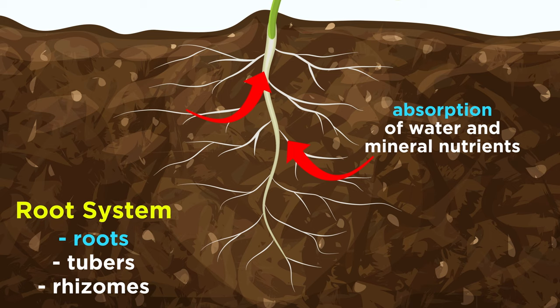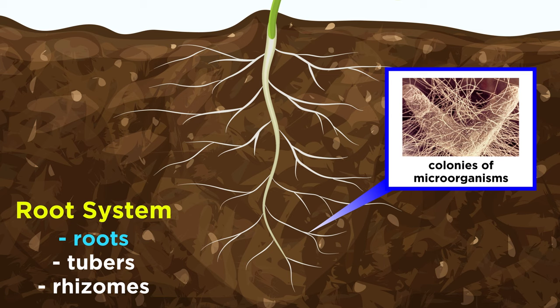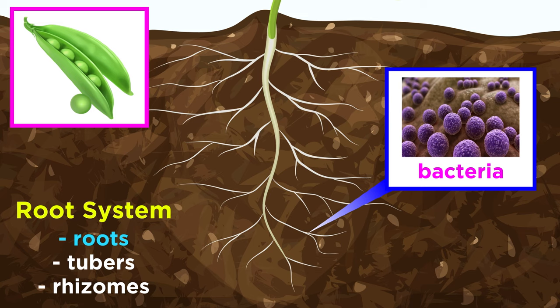The roots are branching structures that extend into spaces in the soil and absorb water and mineral nutrients, delivering them to the rest of the plant. Some plant roots also include pockets for bacteria or fungal colonies to live in. The fungi living in these pockets are called mycorrhizae, and they form symbiotic relationships with plants, providing mineral nutrients to the plant in exchange for sugars from photosynthesis.